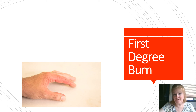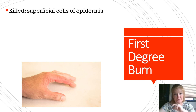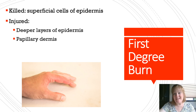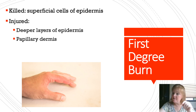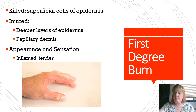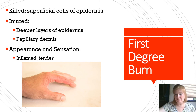A first degree burn kills the superficial cells of the epidermis, and there may be damage to the papillary dermis, the most superficial layer of the dermis. The appearance is inflamed, tender, and red. There are no blisters.